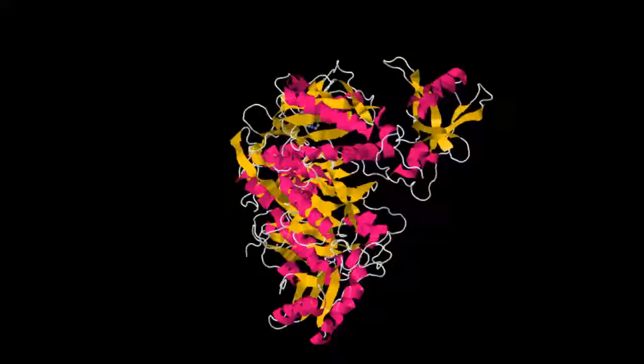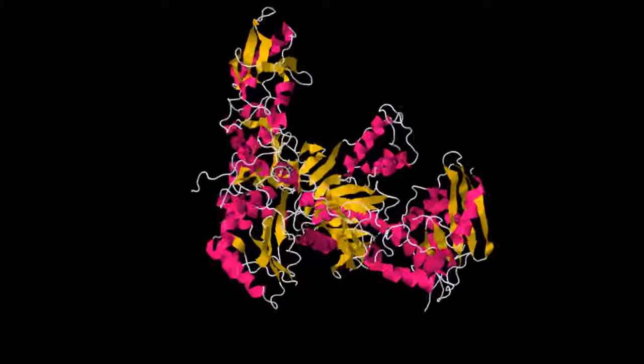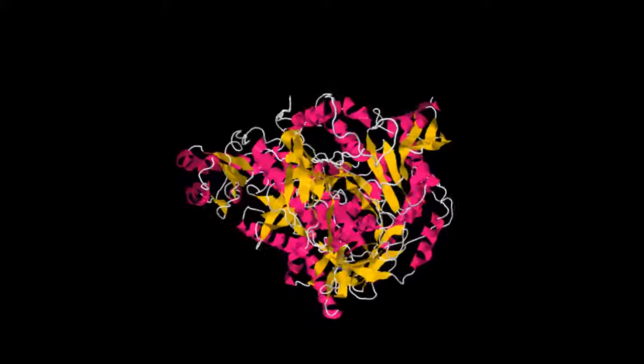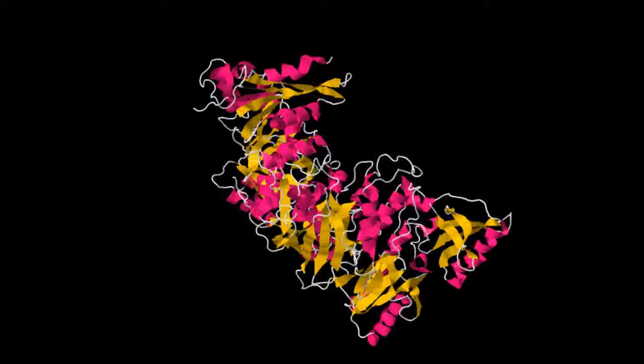This is an image depicting the structure of reverse transcriptase, which is an enzyme that HIV uses to translate its genetic material, which is RNA, into a single strand of DNA. This DNA is then copied again in order to produce a double-stranded segment of DNA.